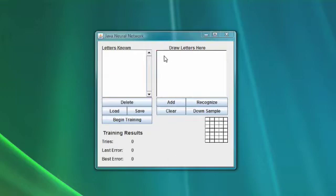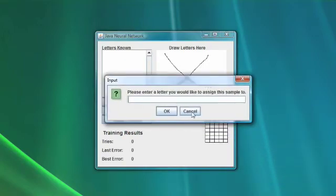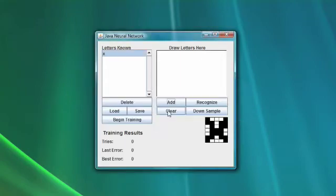What we are going to do first is begin to draw a letter. We are going to draw the letter X. Here you see the letter being drawn in that area. We are going to add X and it is going to show up over on the left. And you can see that it is prompting us for what letter we actually drew. So we are typing X. So now it knows the letter X. And you can see the downsampled version of the X there.